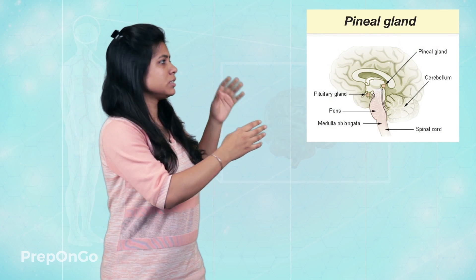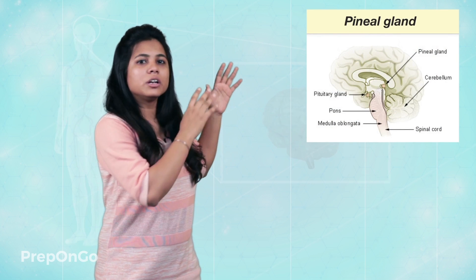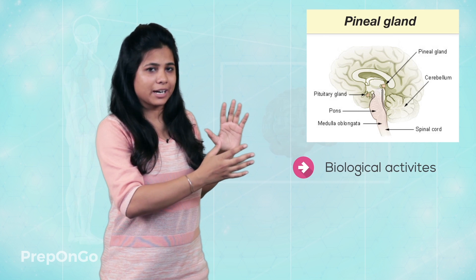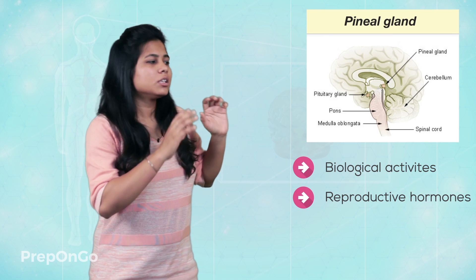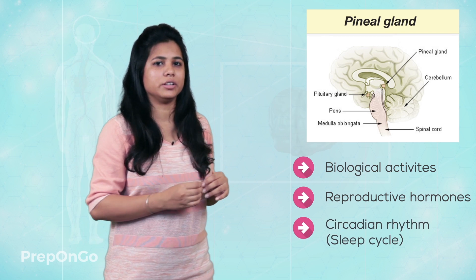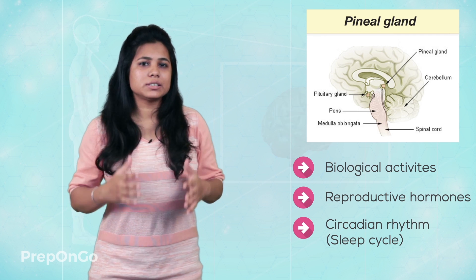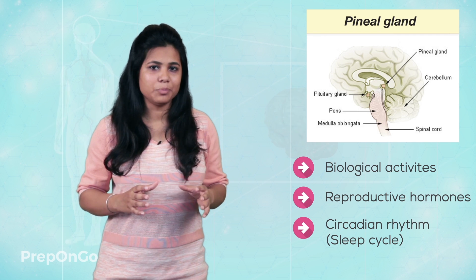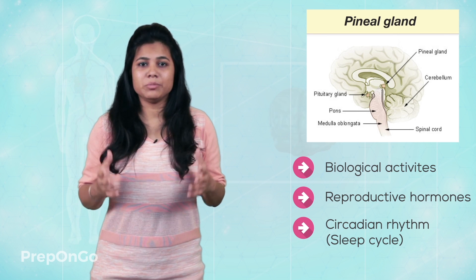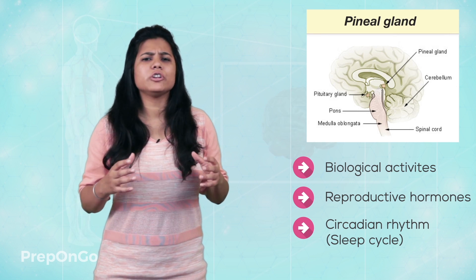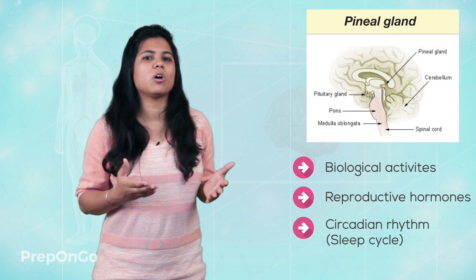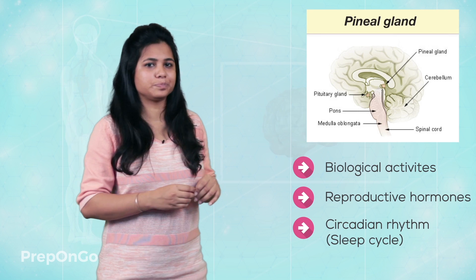Near to these two glands is the pineal gland. The pineal gland is responsible for all the biological activities and reproductive hormones. The main function of the pineal gland is controlling the circadian rhythm, which controls sleep and other biological activities. So if anyone says you sleep a lot or have a sleeping problem, you can answer that it's not you — it's because of the circadian rhythm.